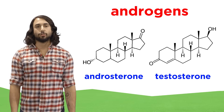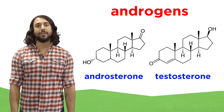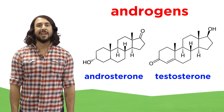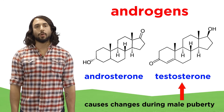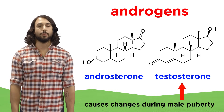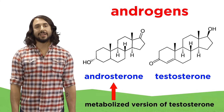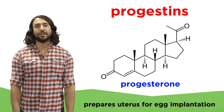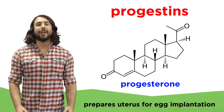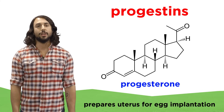The male sex hormones, androsterone and testosterone, are incredibly similar to the female hormones, with the only differences occurring in the A-ring. Similarly to the female hormones, testosterone does all the work promoting the growth of body hair and facial hair, lowering of the voice, and other traits associated with puberty, whereas androsterone is just the metabolized version that is excreted into the urine. And progesterone is the most important pregnancy hormone, which prepares the uterine lining for implantation of a fertilized egg and suppresses further ovulation during pregnancy.